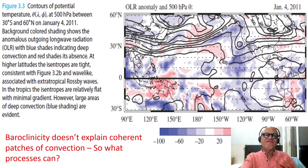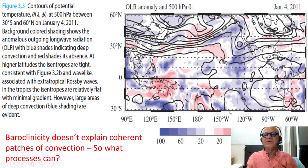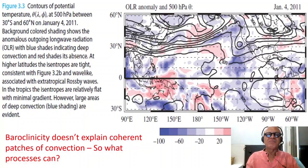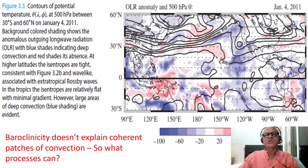Now we can easily go online and find all kinds of data for outgoing longwave radiation, winds, geopotential, and so on, and plot these things and make lots of statements about the weak temperature gradient, the convection, the strong gradients, and the wave structure. We can also find reanalysis products which merge these data with dynamical models and provide all kinds of information in the vertical as well as the horizontal. So you can imagine what it was like before so much data became available.